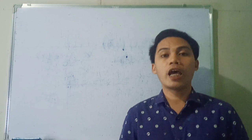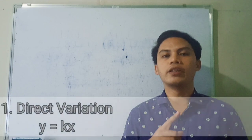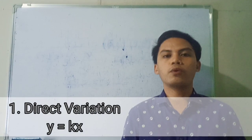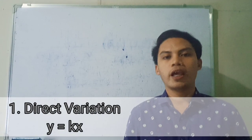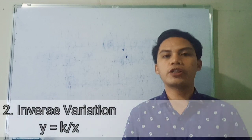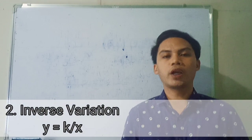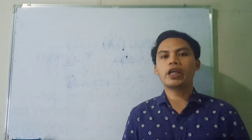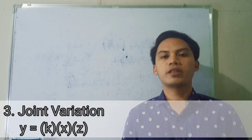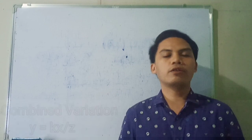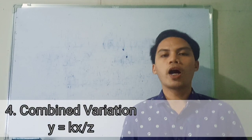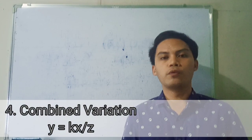As we all know, we have four types of variations. We have the direct variation that is equal to y equals kx. And inverse variation, we have y equals k over x. Joint variation, we have y equals k times x times z. And combined variation, we have y equals kx over z.